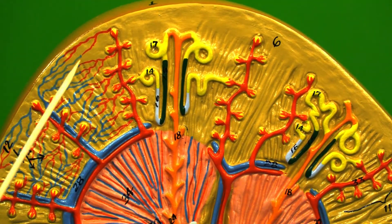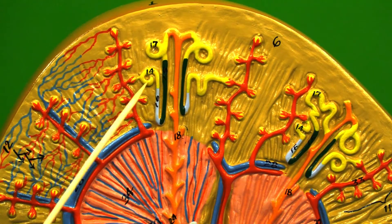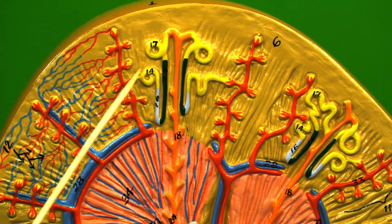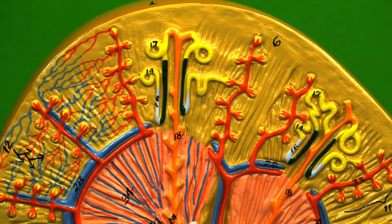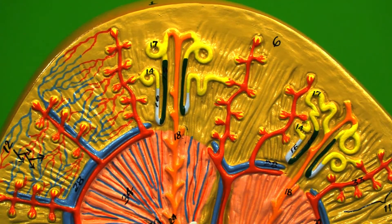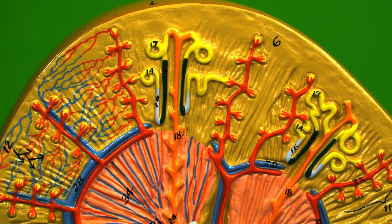As the filtrate moves through the Bowman's capsule it comes into a twisty section of nephron known as the proximal convoluted tubule. This is where the majority of the filtration is going to happen.